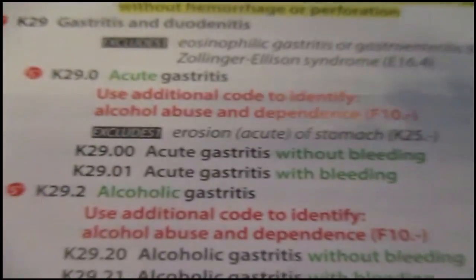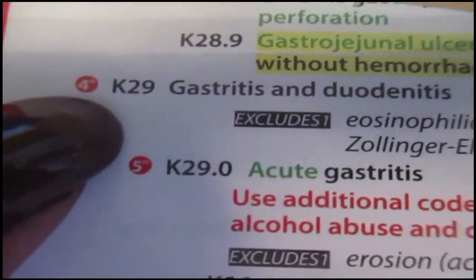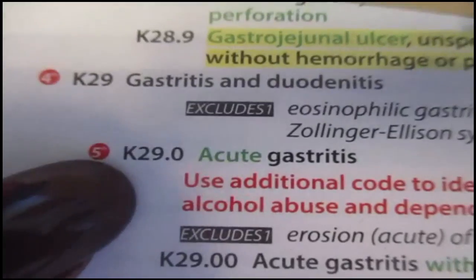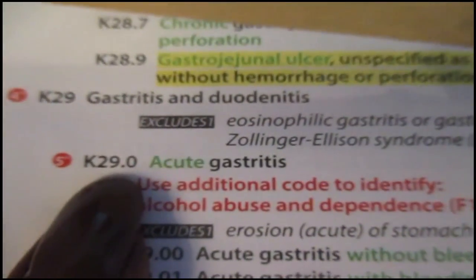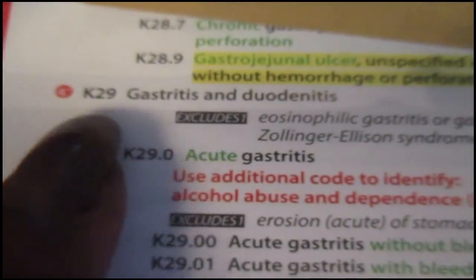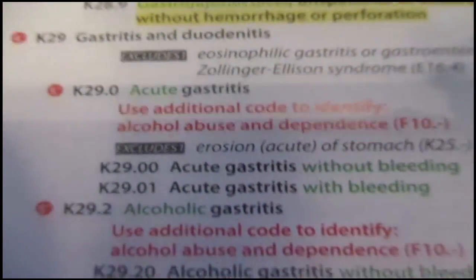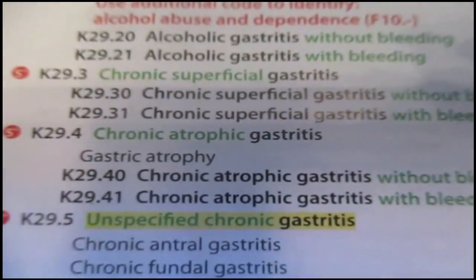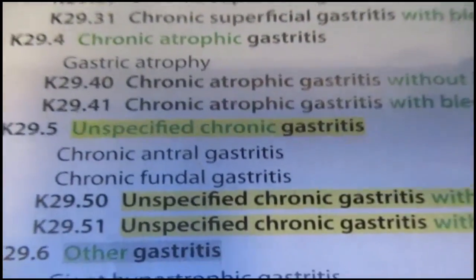If a code expands — in other words, where it tells me go to the fourth digit or go to the fifth digit — I have to go. That code will not stand alone; I cannot use it as-is. I have to expand it when it tells me to go to the next digit.